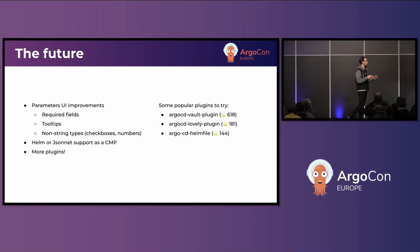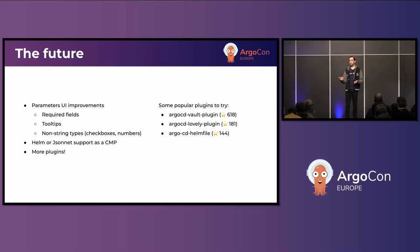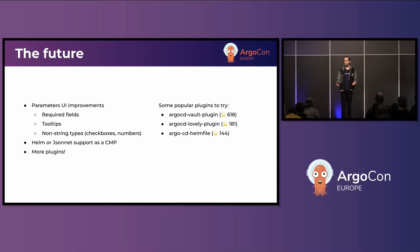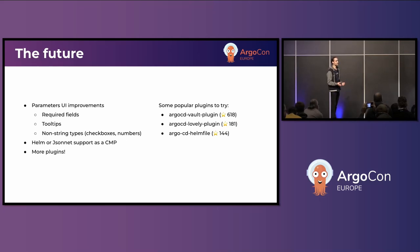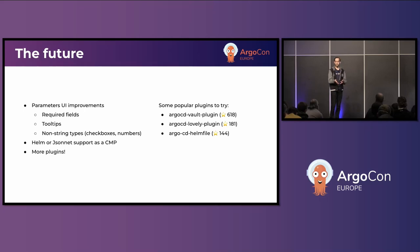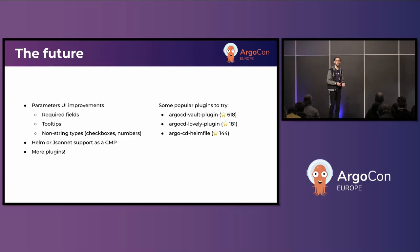To wrap it up — for the future of config management plugins, I envision a few things. The UI is already really good. I want to add support for required fields, checkboxes, and number fields to make it even more intuitive. I'd love to have Helm or Jsonnet support as a CMP. I think plugins are going to be the future of how Argo CD generates manifests because they bring so many advantages. I also want to see more plugins. By far the three most popular are the Vault plugin, Helmfile support, and the Argo CD Lovely plugin, which combines Helm and Kustomize support and provides a way to chain plugins. People are doing really cool things.